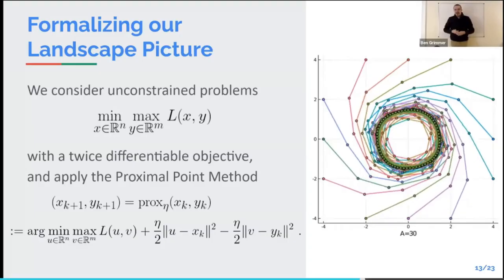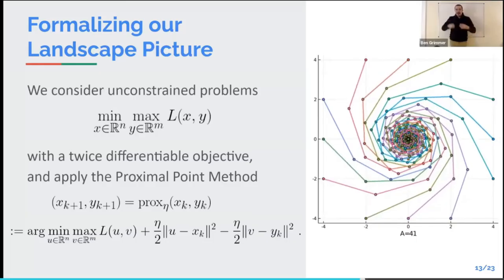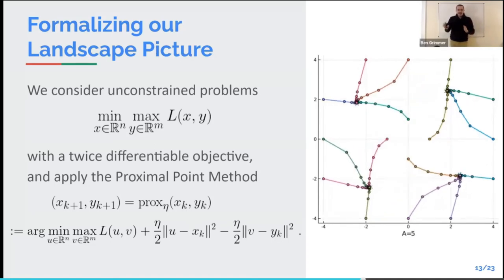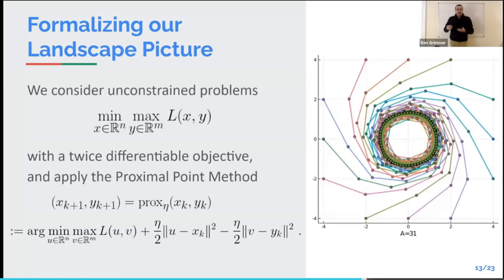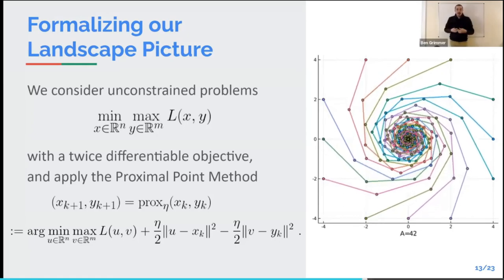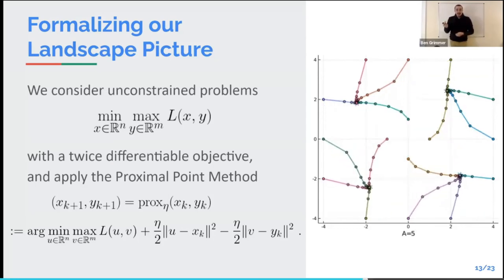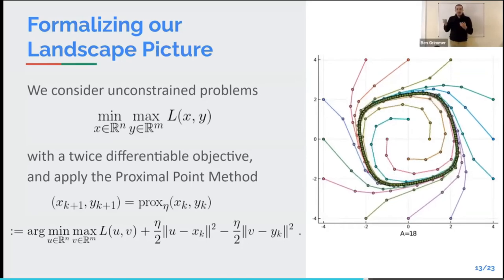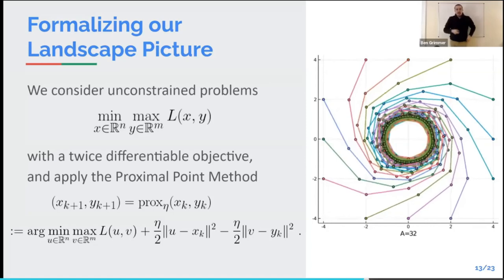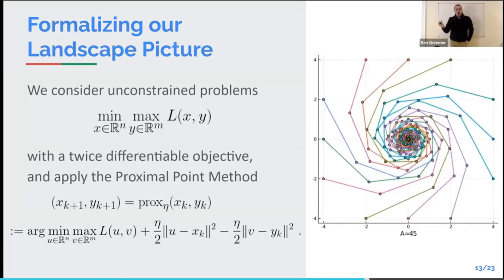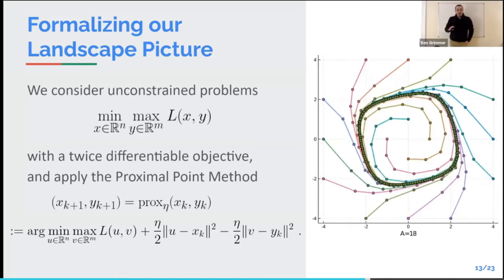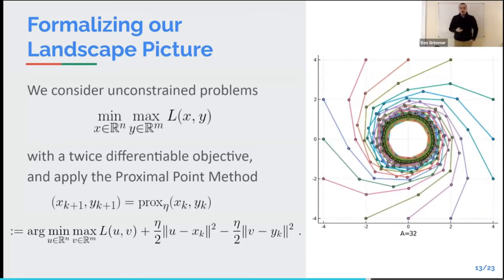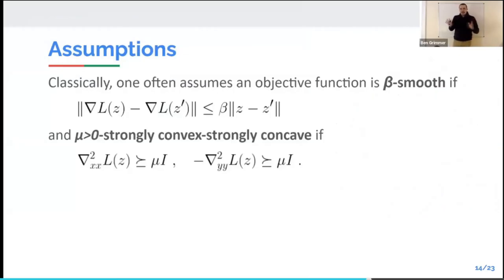The particular kind of problem where we can give these three regimes is unconstrained minimax optimization with a twice-differentiable objective — I need twice differentiable just so that I can point to the off-diagonal part of the Hessian as the amount of interaction, though most of the theory doesn't really rely on being twice differentiable. The algorithm I'm using is the very classic proximal point method. At each iteration, we add in a quadratic penalty that prevents each variable from moving very far: in the X direction we add a quadratic centered at the current x_k, and for Y we subtract a quadratic centered at y_k. If these penalties are large enough, solving a minimax problem over this regularized objective won't move very far, and if the step size is big enough this sub-problem is much easier to solve than the whole problem.